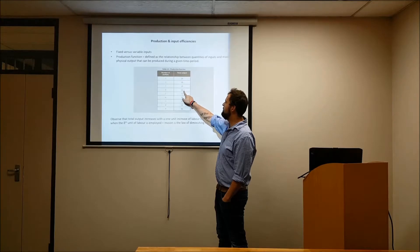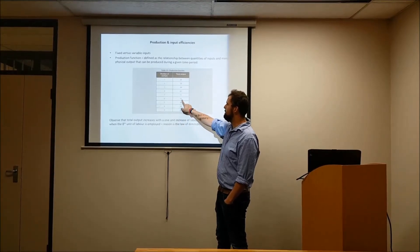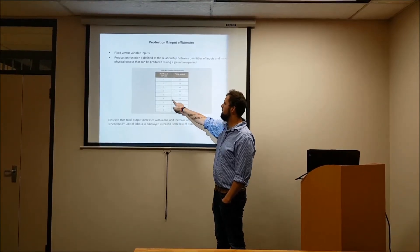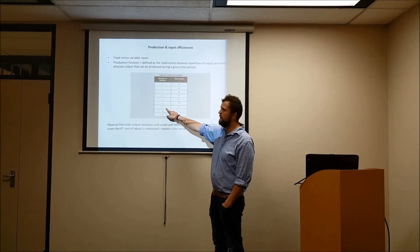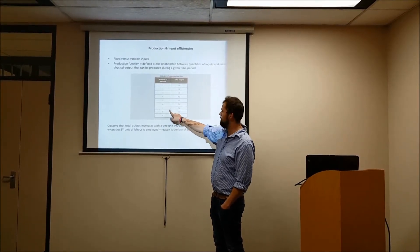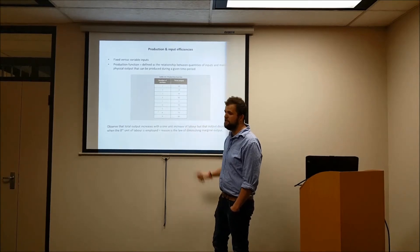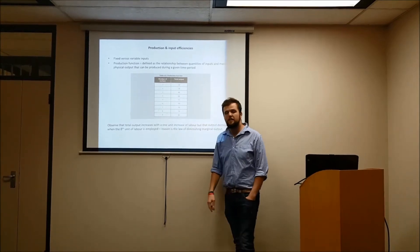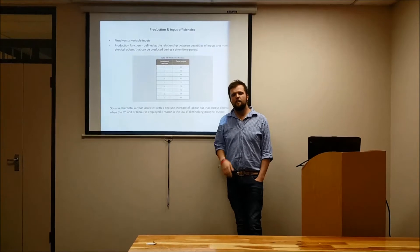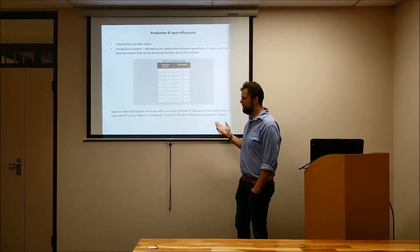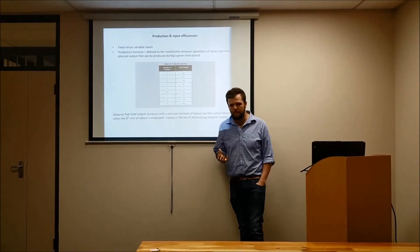As you can see, output increases up until a certain point. At labour 6, you have 76 units of output, but if you add another labourer, your total output still remains 76. This is a concept you need to understand, and I'm going to use an example to guide you through it.